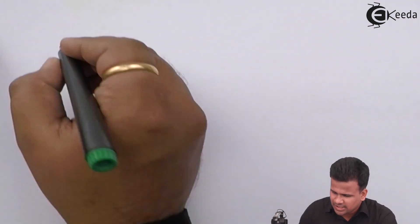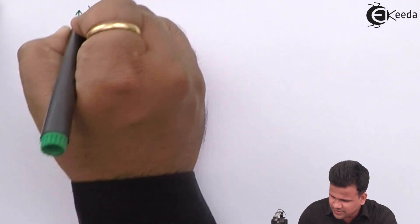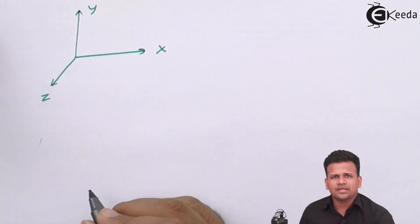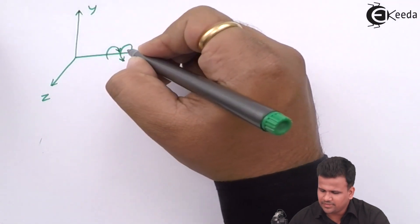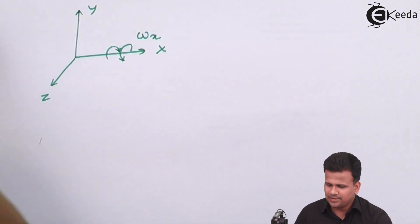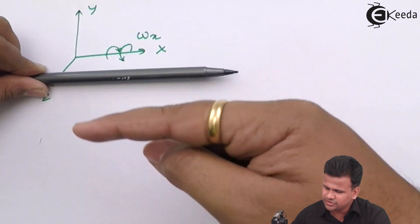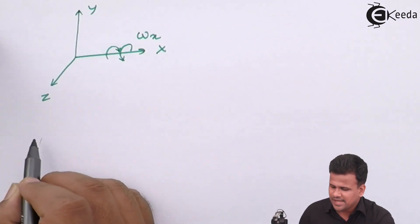We can express rotational and irrotational flow in the form of a mathematical equation. Considering three axes — x, y, and z — if a particle is rotating along the x-axis, either clockwise or anticlockwise, it governs what we call angular velocity along the x-direction. That rotation, clockwise or anticlockwise over the surface, is called rotation along the x-axis.